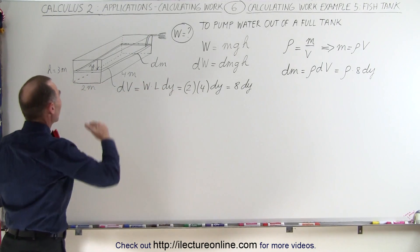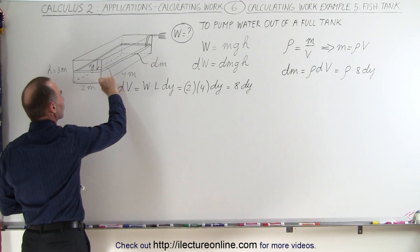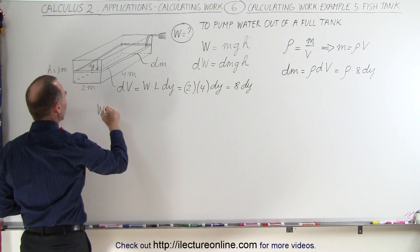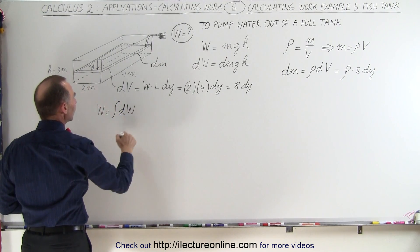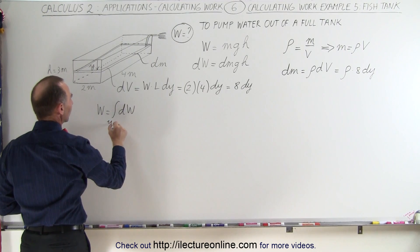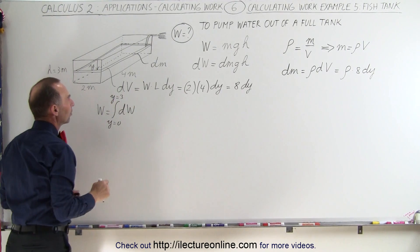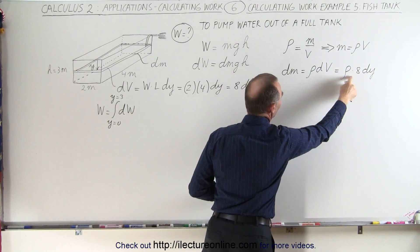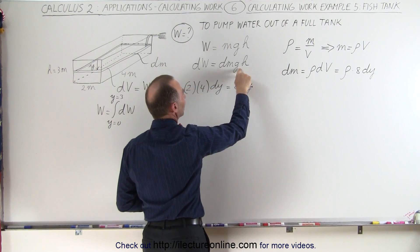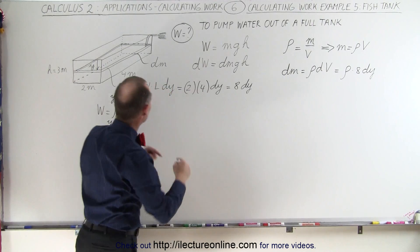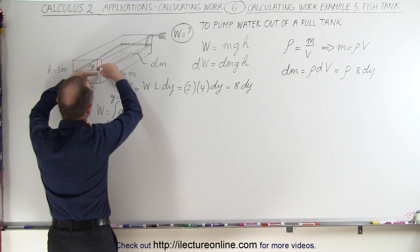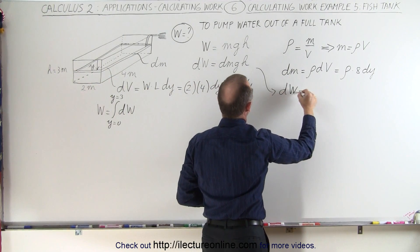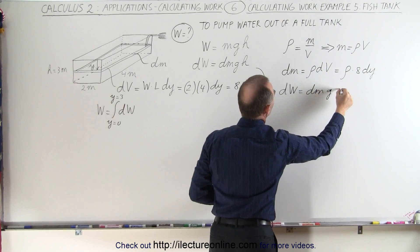Next, we're ready to sum up the work done to move each of the thin layers from the tank to the top as we pump out the water. The total work W equals the integral of all the small dws from y equals zero to y equals three. Our dw is dm — which is eight times the density times dy — times g times y, because each layer has a different y value.